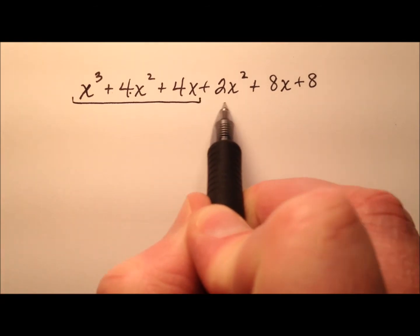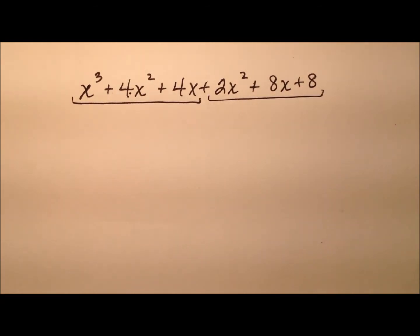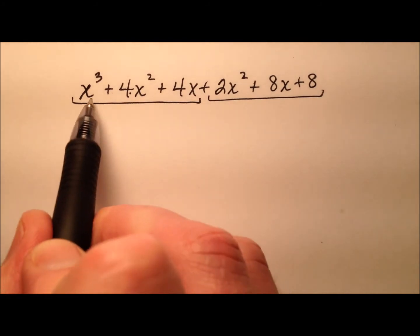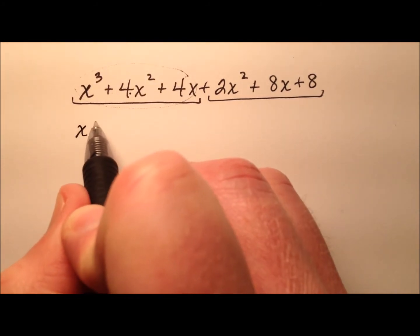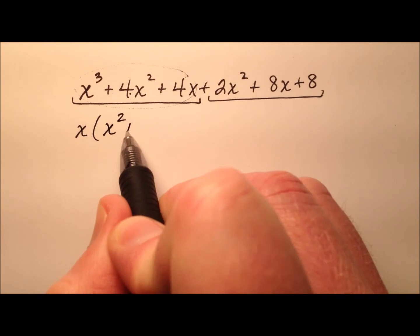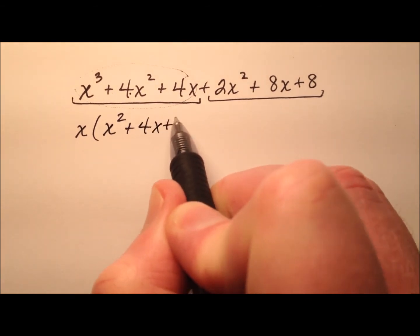So let's go ahead and break it into two groups of three instead. So the greatest common factor here looks like just a single x. So I'll have x squared plus 4x plus 4.